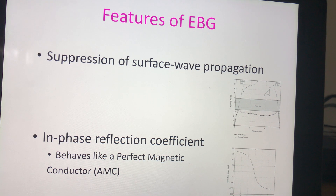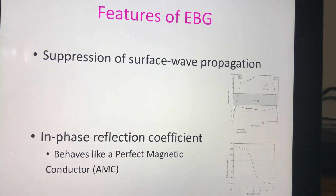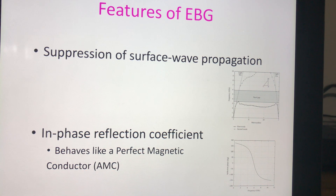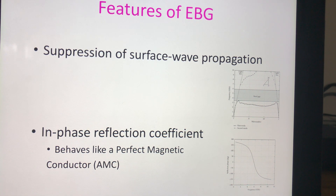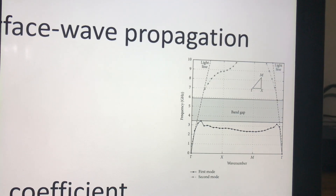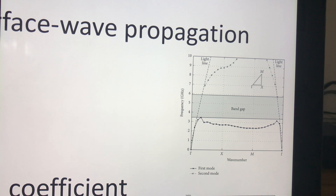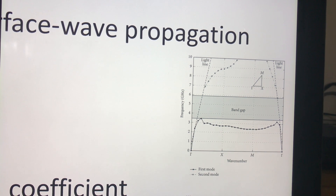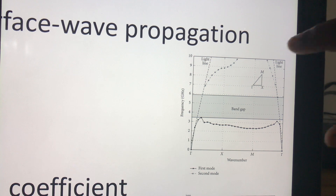There are two main characteristics of EBG structures. The first is surface wave suppression — the EBG structure has the ability to suppress surface waves at certain frequency regions, hence the name electromagnetic band gap. When you characterize an EBG and obtain its dispersion diagram, you can see a definite band gap — a frequency range where no waves can propagate.